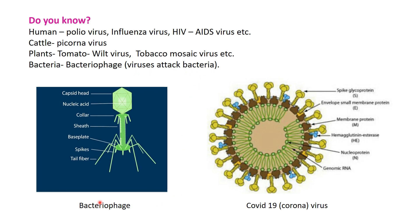We will see the structure of bacteriophage. This is the structure of bacteriophage - this is the virus that attacks bacteria. It has a capsid - a head-like structure - and inside that, nucleic acid is present. It also has a collar, sheath (meaning covering), base plate, spikes, and tail fiber. This is the structure of bacteriophage - you have to do practice of this diagram.